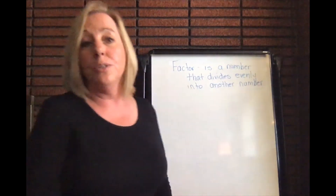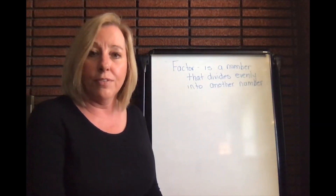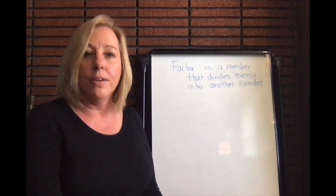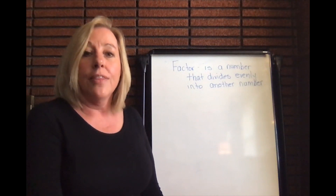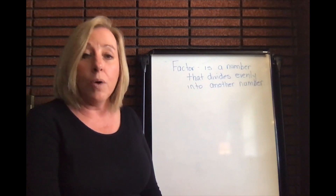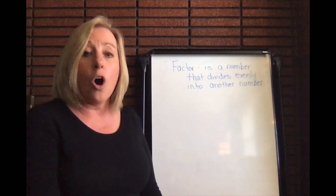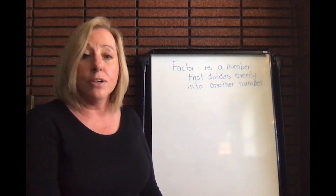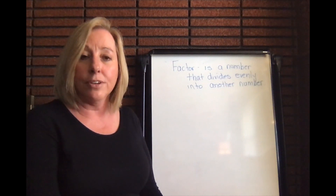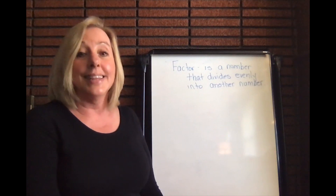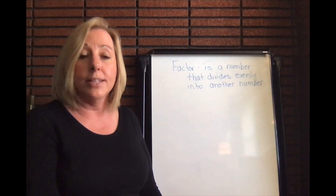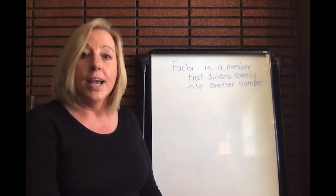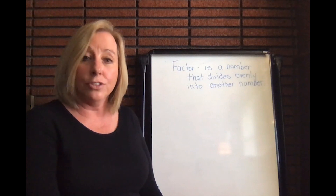Finding the factors of a number is important because we use it quite a bit when we add, subtract, multiply, and simplify fractions. A factor is a number that divides evenly into another number — without anything left over, or a remainder. Trick number one: the first factor of every number, no matter how big or small, is always going to be 1, because 1 goes into every number evenly. Trick number two: the last factor of every number is going to be the number itself.